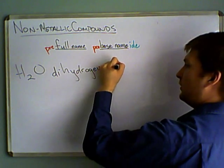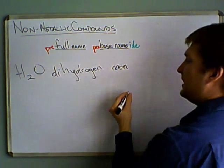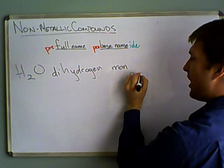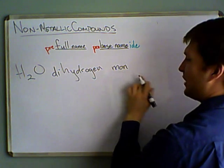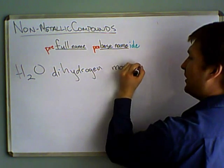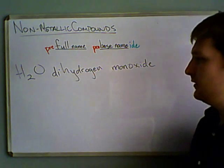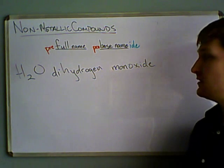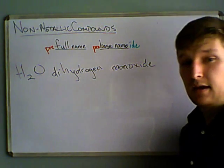And then the prefix for this, which is one, is mon, and it should be mono, but it's not going to be monooxide, because we're going to drop that O, monoxide. So, there you go. I think this is pretty much straightforward.